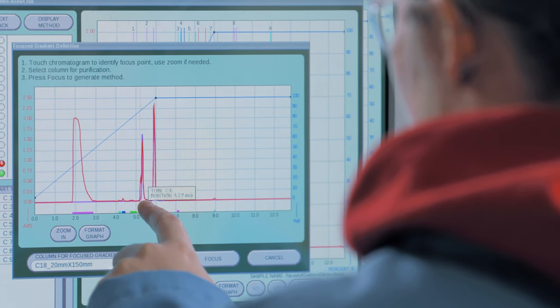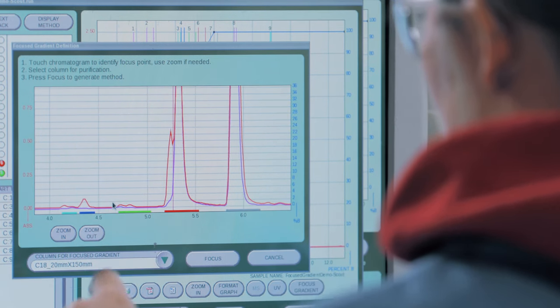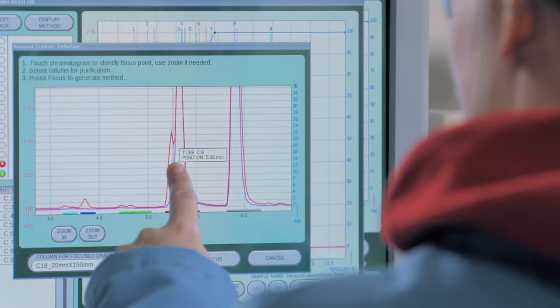That opens a second screen, again showing the peaks of the run. Select the peak that you want to purify. To make that easier, you can zoom in on the chosen peak.